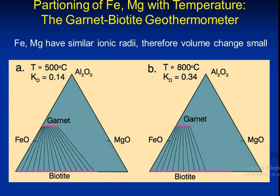First of all, we discuss the partitioning of Fe-Mg with temperature — the garnet-biotite geothermometer. Fe and Mg have similar ionic radii, therefore the volume change is small in the garnet-biotite geothermometer.